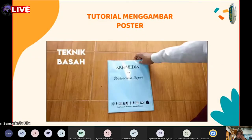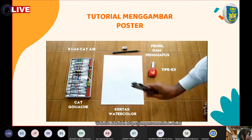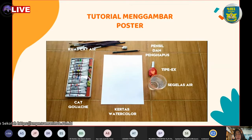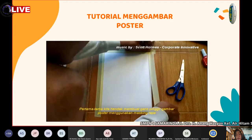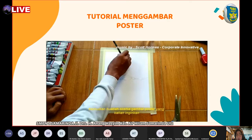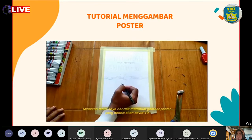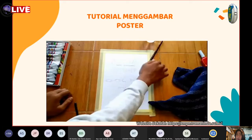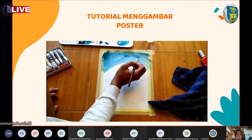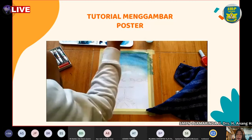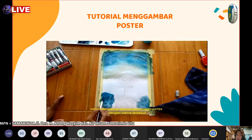Beralih kepada teknik basah dalam menggambar poster. Adapun alat dan bahan yang akan digunakan seperti yang ada dalam video ini. Pertama, buat garis pinggir gambar poster menggunakan masking tape. Kemudian buatlah sketsa gambar poster yang diinginkan — di sini contohnya membuat poster bertemakan COVID-19. Di sini menggunakan cat gouache sebagai pewarnanya. Pertama-tama warnai background poster dengan membasahi kuas dan warna cat yang diinginkan, kemudian warnai seluruh permukaan kertas.